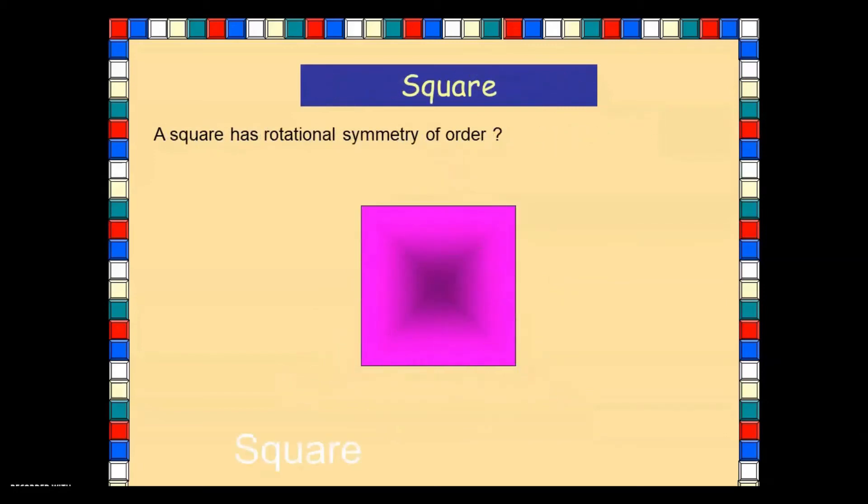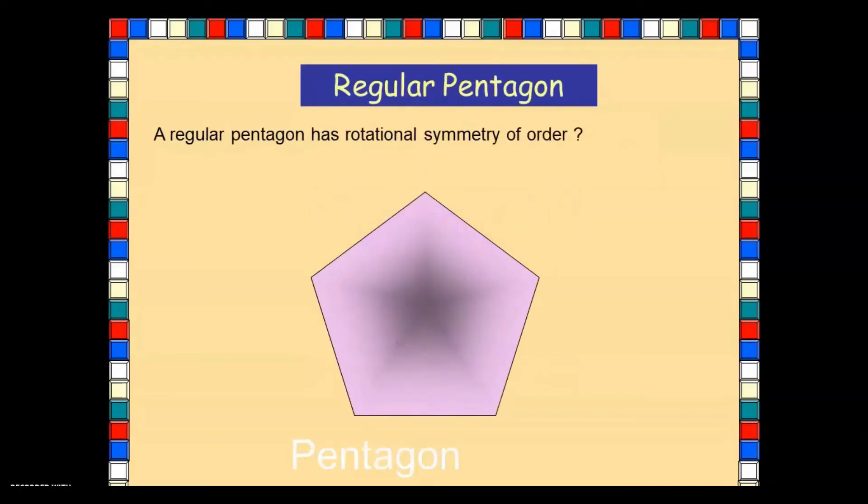A square. Let's rotate this: 1, 2, 3, and 4. So it has rotational symmetry of order 4.